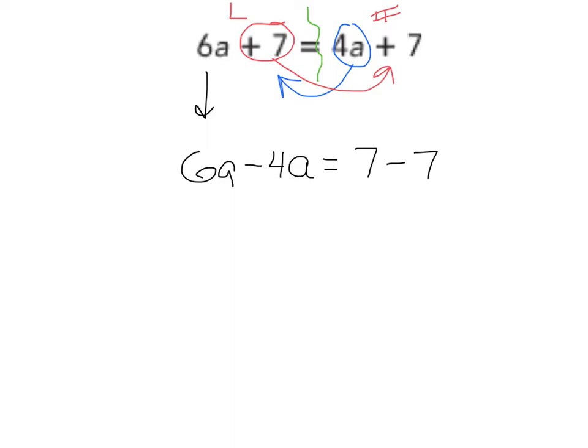Our next step, we want to look at combining our two a's. 6a minus 4a is 2a. Equals 7 minus 7 is going to be 0. Then our next step, divide both sides by 2. That cancels. We're left with a equals 0 divided by 2. So any time you have a 0 in the numerator, the answer is 0. So our letter a equals 0.